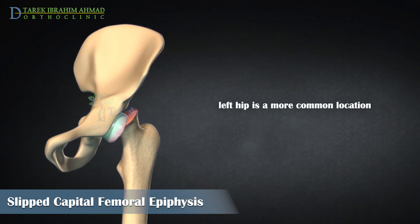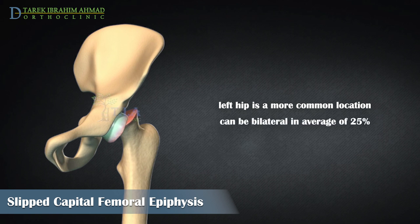SCFE usually occurs on only one side. The left hip is affected somewhat more often than the right, for unknown reasons. However, it can occur on the opposite side as well. SCFE is bilateral in an average of 25% of cases at presentation.